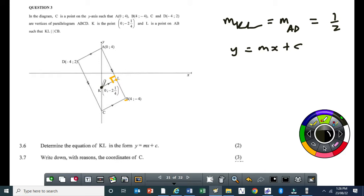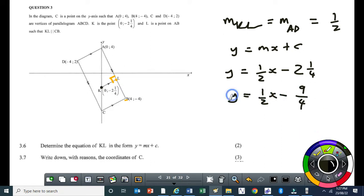Y equal to MX plus C. Then we substitute the coordinates. We don't need to substitute the coordinates because this point K here, it's an X, it's a Y-intercept, which means the value of Y at K is minus 2 and a quarter. So this value minus 2 and a quarter is also equal to C because X is 0 there. So I can just write my equation Y equals 1 half X minus 2 and a quarter, which is the same as 1 half X minus 9 over 4. You don't need to calculate the Y-intercept. Any of these two will be acceptable. Do you see how easy it is?